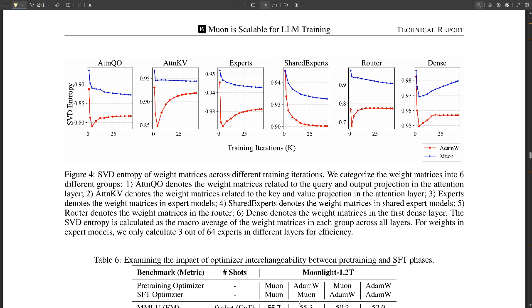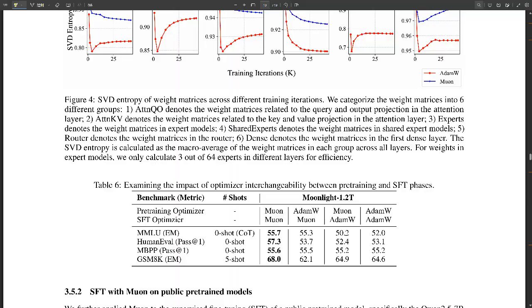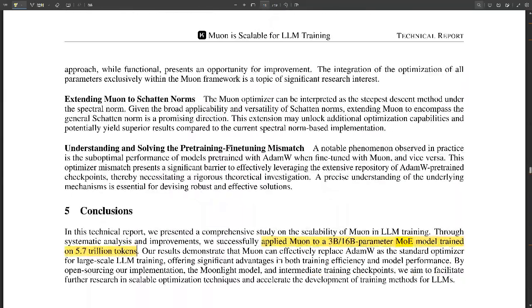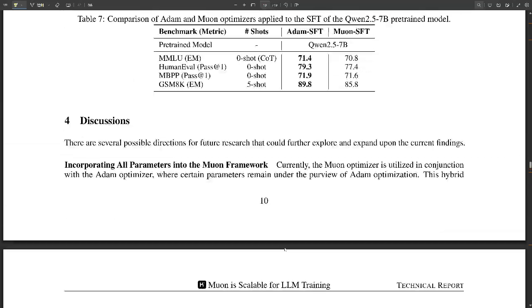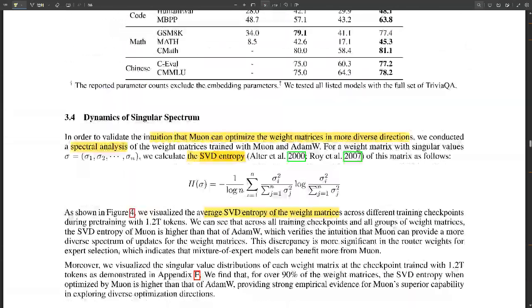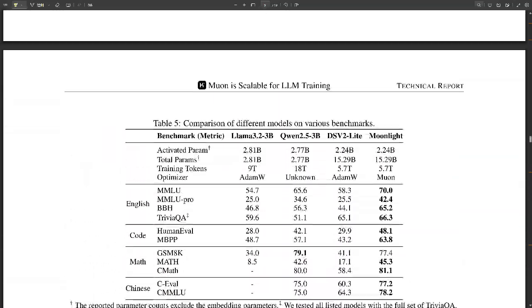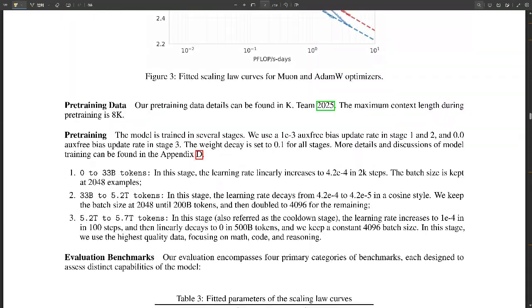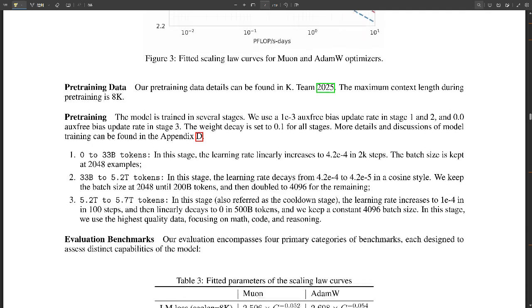But trying to orchestrate that process efficiently, that's no easy task. The researchers had to overcome some pretty big challenges in adapting Muon for this distributed training setup. Okay, let's get into the details of distributed Muon. It might get a little technical, but I think it's really important to understand how these models are actually trained in the real world. Right. So what do they have to do to make it work? Well, they had to get creative with memory optimization. Okay. And this is where a technique called ZeRO comes in. It stands for Zero Redundancy Optimizer.